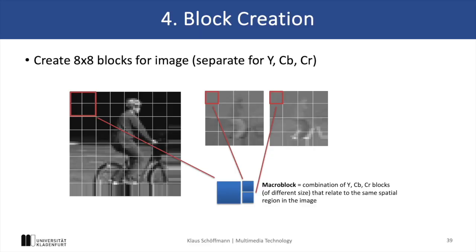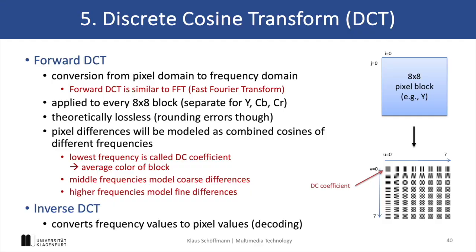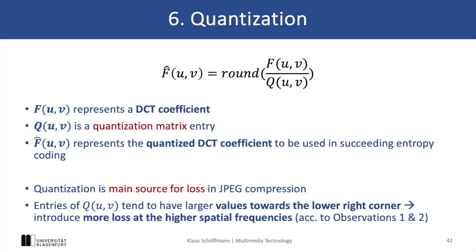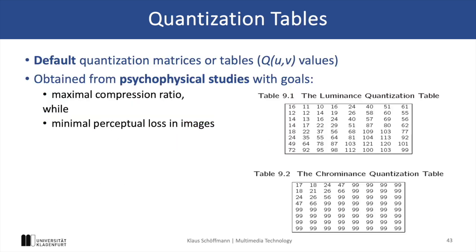After color subsampling, we create 8x8 blocks of pixels and combine four such luma blocks with the corresponding Cb and Cr blocks. This combination is known as a macroblock, which is the processing unit for all further steps in the JPEG encoding scheme. For all blocks we then perform a forward DCT — discrete cosine transform — converting from the spatial pixel domain to the frequency domain. The resulting frequency coefficients are then divided by quantization values in the next step, using quantization matrices such that DCT coefficients on the upper left are divided by small values while coefficients on the lower right are divided by large values, effectively discarding high-frequency components in a block.